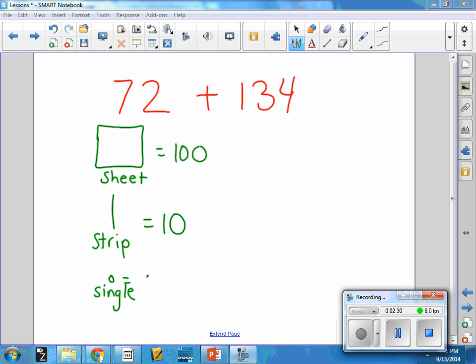Students last year worked with sticker notation. So they worked with how to build numbers first, how to build 72, how to build 134. So what a student might do with this equation, if they were to build 72, is it might look something like this. They would have seven strips and then two singles.